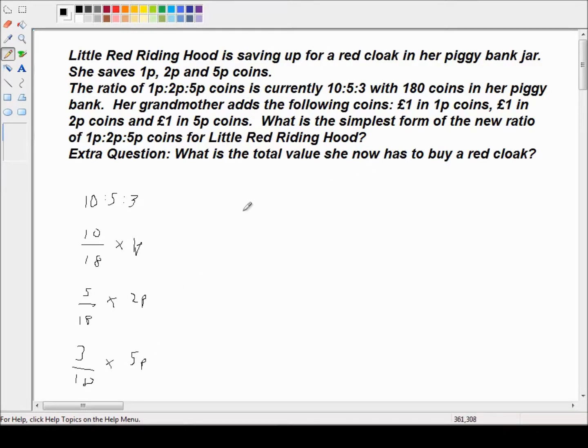Now she has a total of 180 coins. So we have to look at these fractions here and think what do we have to do to the denominator of these fractions to turn 18 into 180? Well the answer just presents itself straight away. We just multiply by 10. Now if we multiply the denominator by 10, we must multiply the numerator by 10. So I'm just going to stick a 0 on everything.